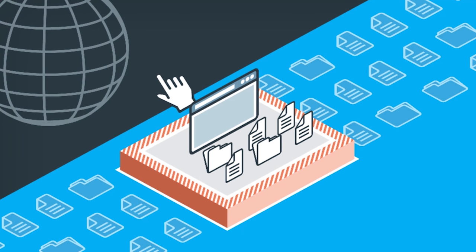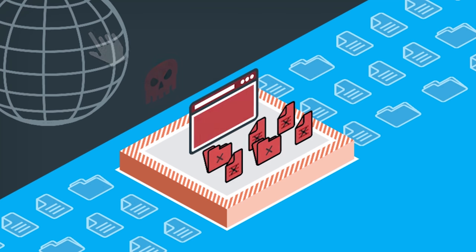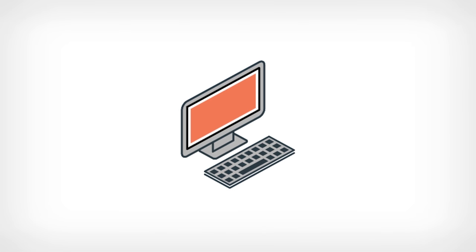Instead, the browser sees only the virtualized file system. So if a malicious executable like ransomware is inadvertently downloaded by the user, then when it executes, it won't be able to see the host file system and it won't be able to damage it. So anything that happens in the container stays in the container and does not impact the host.